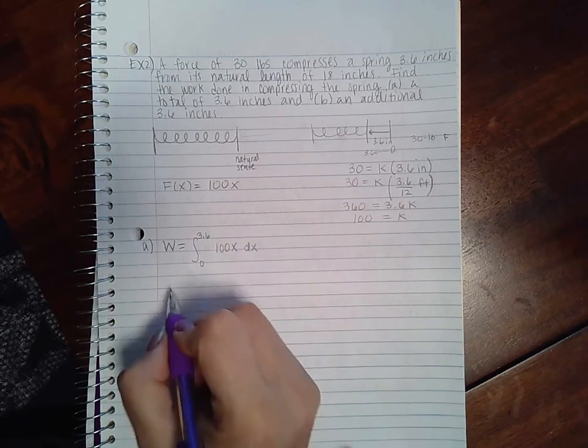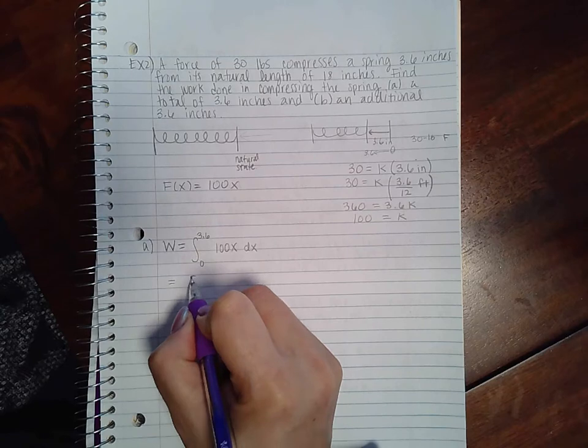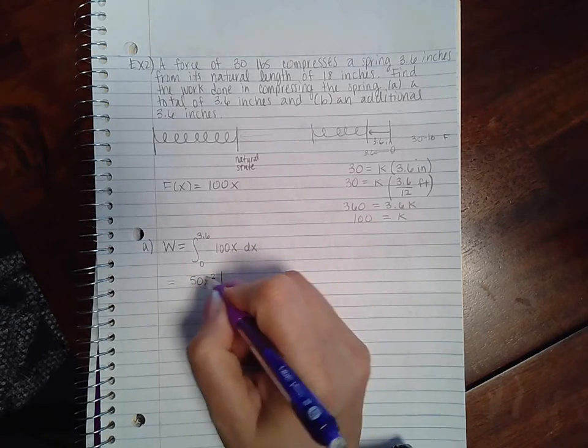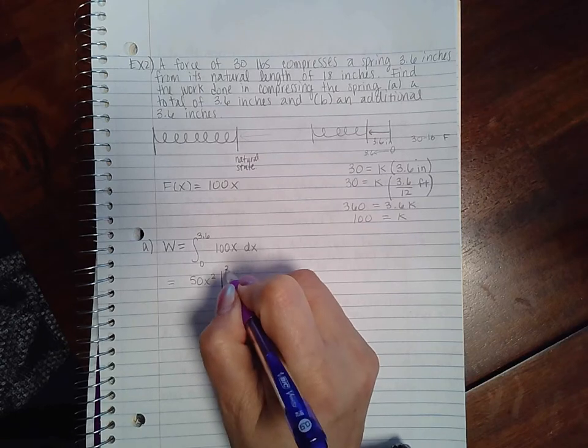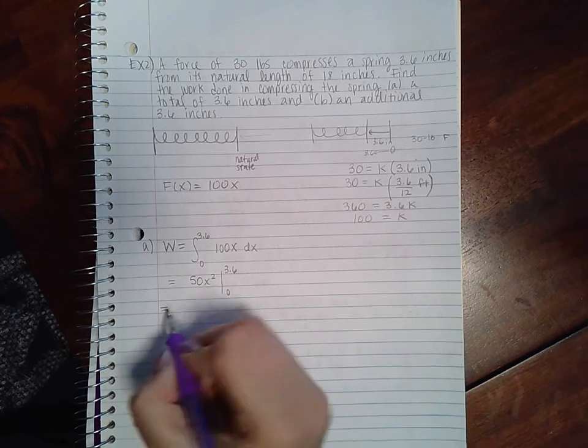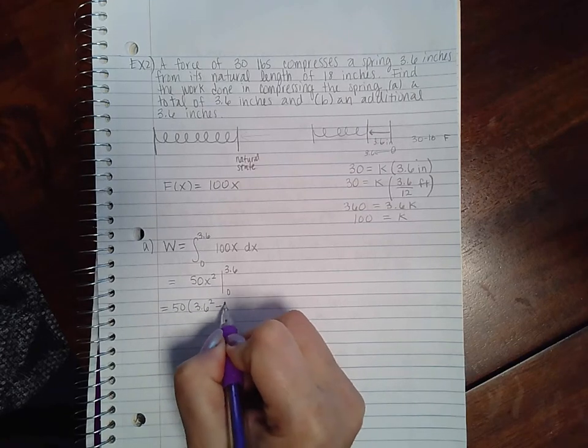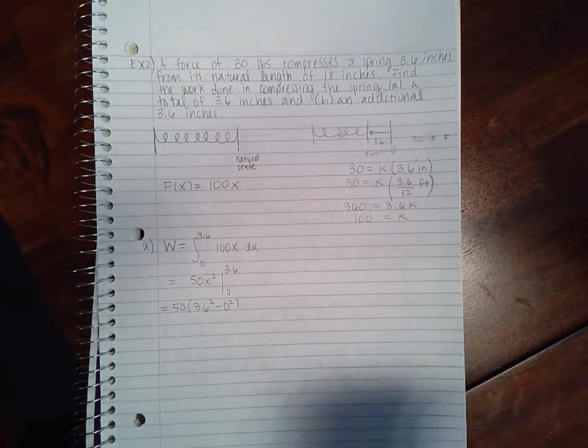That's all I'm moving, so 0 to 3.6, and then here's my function in terms of x dx. So I get 50x squared—that's 100x if I take the derivative—and then if I evaluate that, I get 3.6 squared minus 0 squared, which is just 0.